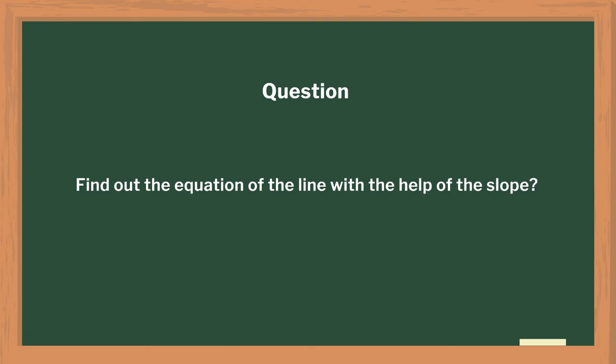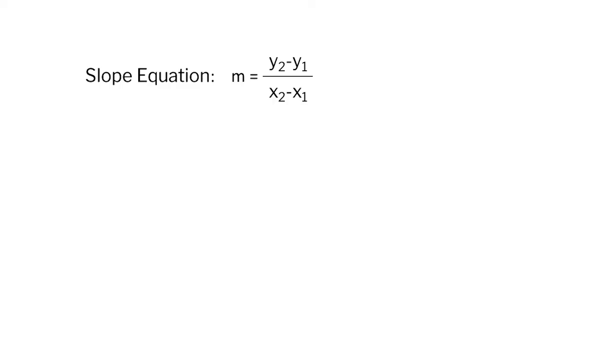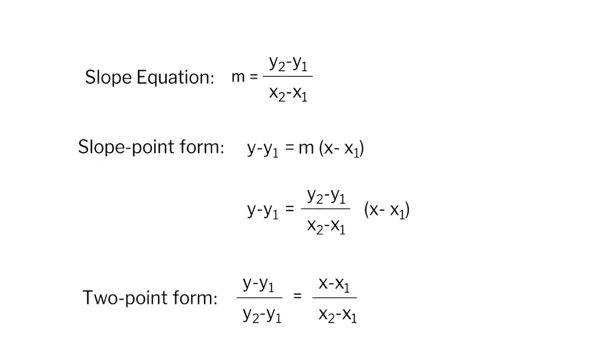Find out the equation of the line with the help of the slope. Students thus found how to find the slope of the line when two points are given on the same line. I encouraged my students to verify the derivation. Once the slope was confirmed, we could derive the two points form by replacing slope in slope point form.